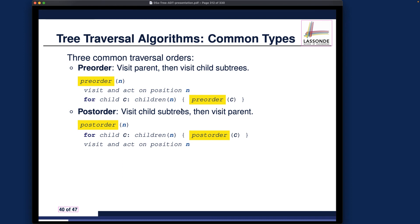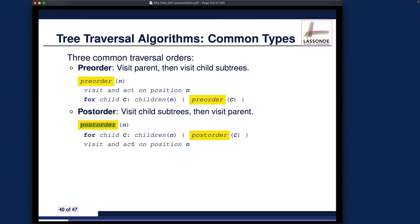The pseudocode is very similar to pre-order except for two things: first, we visit the current root node n at the end rather than the beginning; and second, the recursive call says post-order instead of pre-order. Definition-wise it's straightforward — you just need to get a feel for applying it to more complex example trees, which we'll practice.